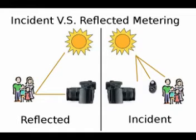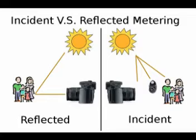Reflected metering works fine if you're photographing a gray subject against a gray background. Other than that, incident might be your better choice, though some people will average between the two.